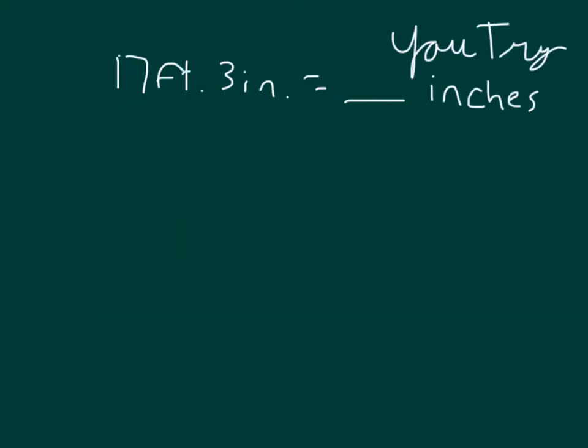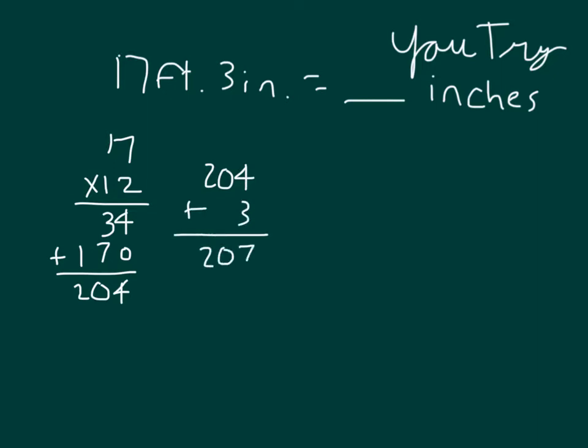Okay, your turn to try 17 feet 3 inches equaling how many inches. The conversion factor is 12. So we go 17 times 12 to figure out how many inches does 17 feet equal. And after we end up figuring out that that equals 204 inches, we take those 204 inches and we make sure to add back in the 3 inches to get 207 inches.